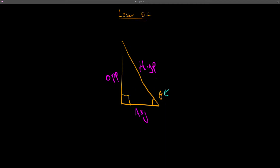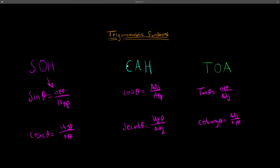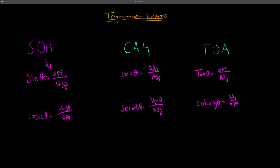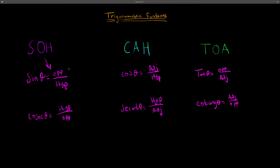Knowing this, we can get into the trigonometric functions, which are sine, cosine, and tangent. It's important to note that these are for acute angles. You can memorize them easily — just SOH-CAH-TOA. Using this, the sine of the angle equals opposite over hypotenuse, cosine equals adjacent over hypotenuse, and tangent equals opposite over adjacent.